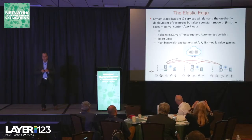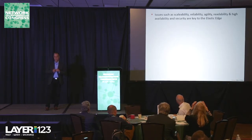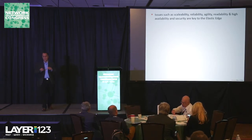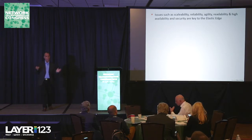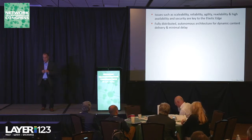If you talk to Amazon, for them the edge is the IoT devices in your office or your home. When it comes to the elastic edge, we're looking at dynamic exchange of content and workloads across different edge sites. Issues such as scalability, reliability, agility, and high availability are going to be key to the elastic edge — and all of that includes security, of course. It's a fully distributed architecture, necessary for dynamic content delivery and to minimize delay.